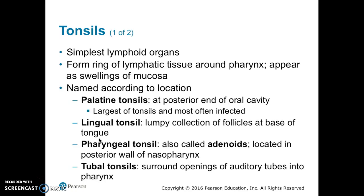Tonsils are named by location. Palatine tonsils are in the posterior end of the oral cavity — these are the largest of the tonsils and most likely to become infected. Lingual tonsils are at the base of the tongue. Pharyngeal tonsils are also called adenoids and are located in the posterior wall of the nasopharynx.